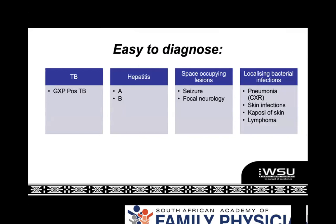In terms of your approach, there are some things that are easy to diagnose and more common, so we look for them first. GeneXpert is great — comes back positive, we've got TB. Hepatitis is easy enough to diagnose on a blood test. A seizure or focal neurology — a CT scan quickly tells you if there's something in the brain. Sometimes you're lucky and there's a clear pneumonia on the X-ray, a clear skin infection, Kaposi, or a lymphoma you can FNA. There are some things we quite often diagnose first just because they're easy to find.